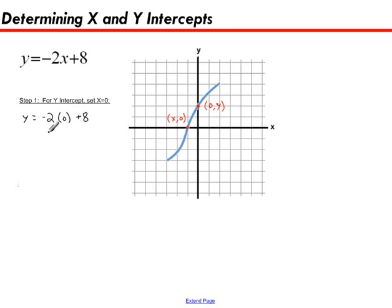Now to simplify this, negative 2 times zero is just zero. So meaning y will be equal to zero plus 8, or y is just equal to 8. And that is my y intercept. And there we go, the y intercept is done.